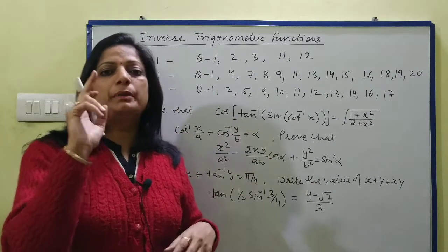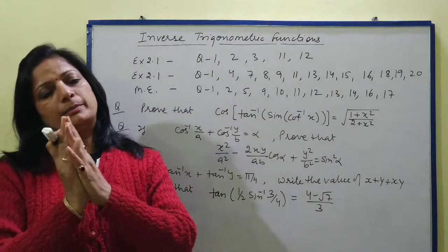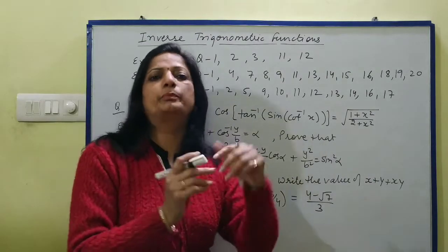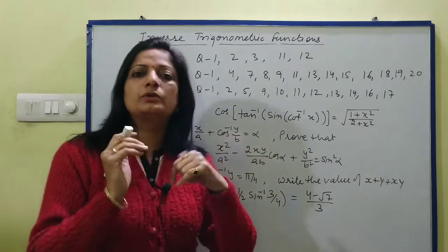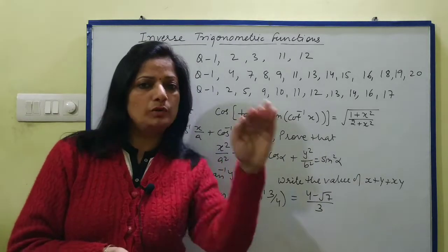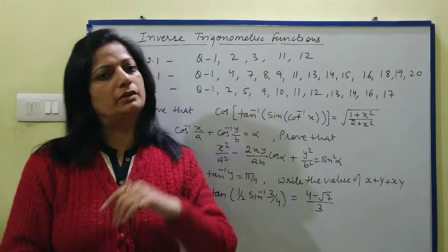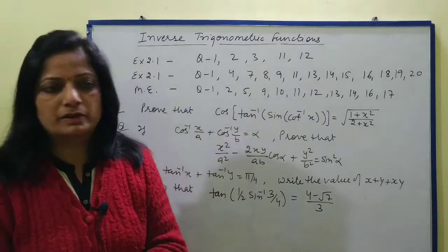Where you have one plus tan x or one minus tan x, you directly put tan pi by 4 plus x. Or if you have cos x plus sin x upon cos x minus sin x, first we divide by cos to change to tan, and then we can solve it.